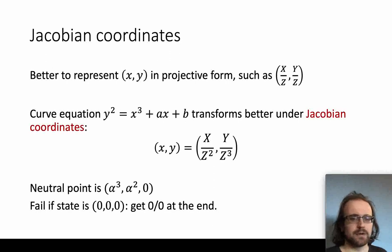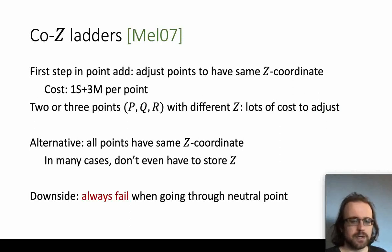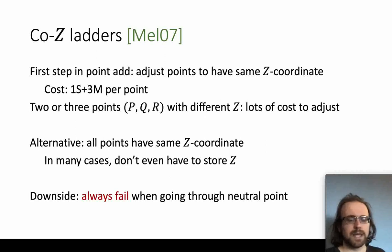However, if you ever reach the state where x, y, and z are all zero, you've failed because you're representing the state as zero over zero. It's also possible, instead of storing a separate z coordinate for each point, to store the three points so they all share the same z coordinate. The main benefit is that the first step of a point addition is typically to rescale points to the same z before subtracting x and y coordinates — this is expensive for Jacobian coordinates. Statically guaranteeing the same z may be cheaper than rescaling during the operation.